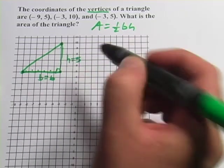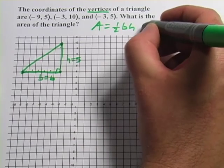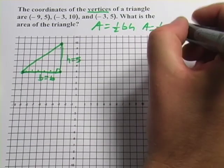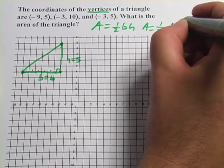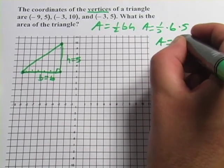And 1, 2, 3, 4, 5, the height is 5. So when we do one-half base times height, we get one-half times 6 times 5.